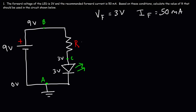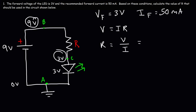Now we have the voltage across the resistor. Based on Ohm's law, we know that voltage is current times resistance. Dividing both sides by I, the resistance is voltage divided by the current. The voltage across the resistor is the potential difference between points B and C, so it's 9 volts minus 3 volts. The 9-volt potential is the source voltage — in this case, the battery's voltage.